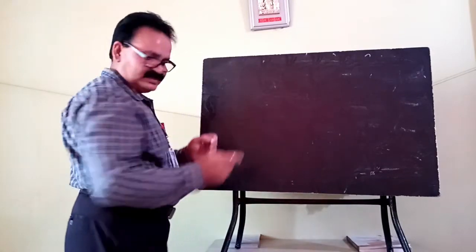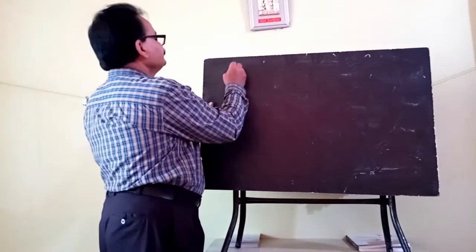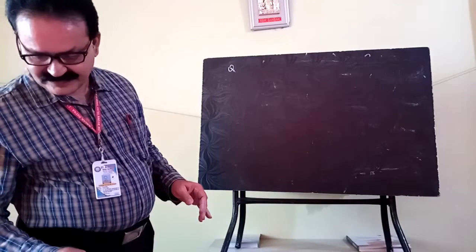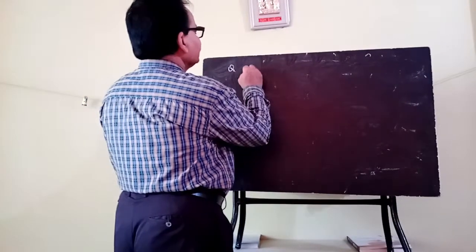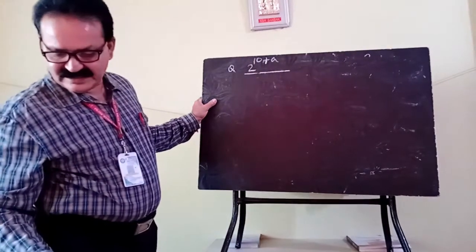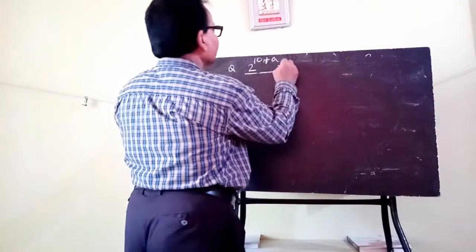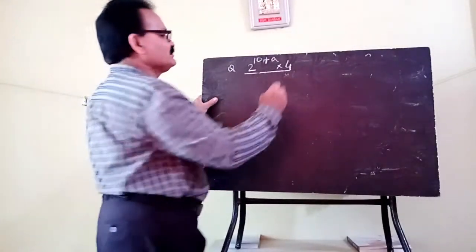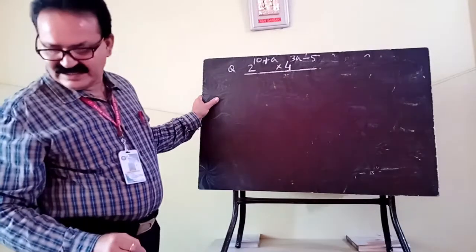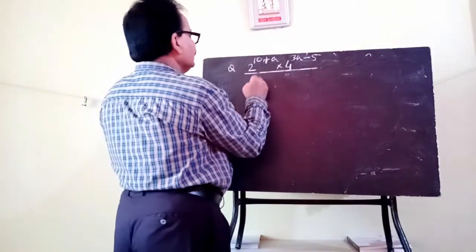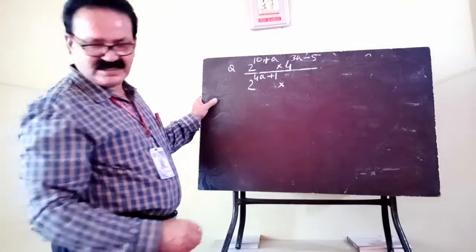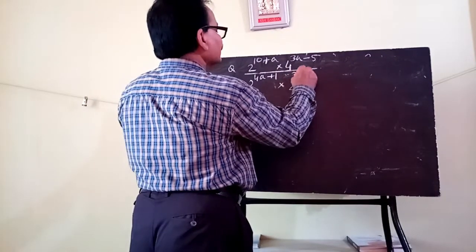Next question for more simplification: simplify 2 to the power 10 plus a, into 4 to the power 3a minus 5, divided by 2 to the power 4a plus 1, into 2 to the power 3a minus 1.